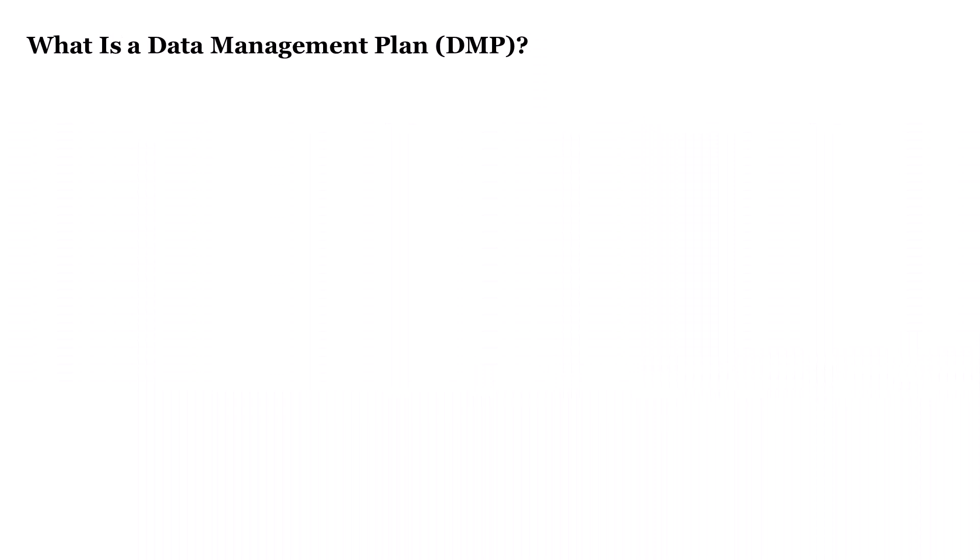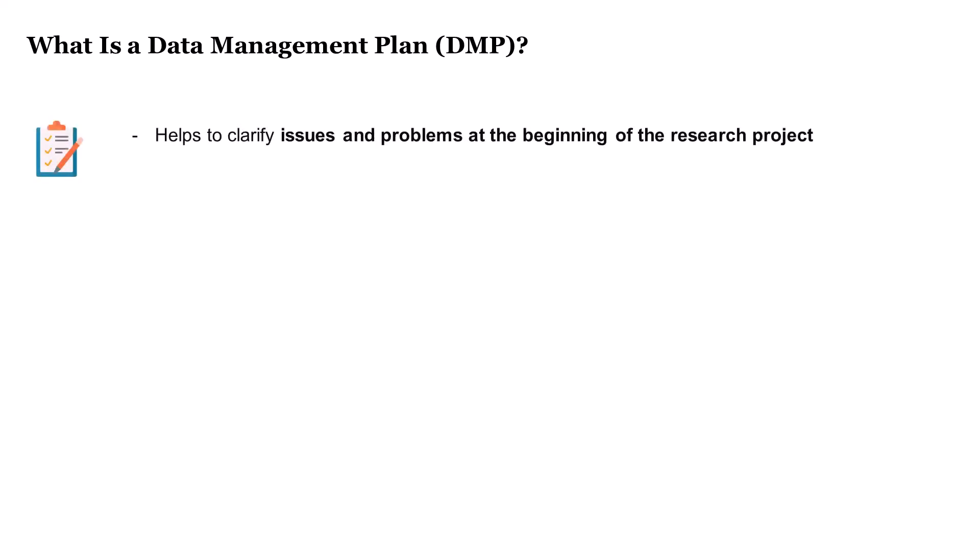Our next topic is data management plans. But what is a data management plan, or so-called DMP? The management of research data also includes having and writing a plan which provides all the information about the data of your research project. A data management plan helps you to clarify issues and problems at the beginning of the project, and you might notice one or two administrative things you forgot to plan or take into account, like accessibility and after-use of data, as well as things like anonymization, licenses, and so on.